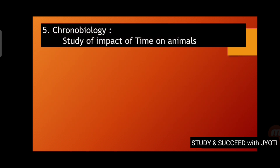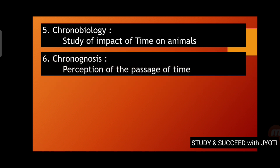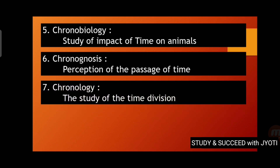Chronobiology means the study of the impact of time on animals — what impact time has on living things. Chronognosis means the perception of the passage of time. Chronology means the study of time division.